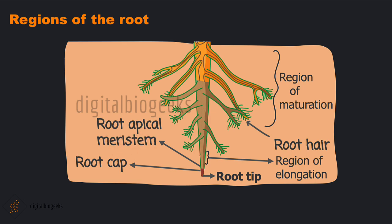Meristematic cells are responsible for the growth of the roots. The cells here are small, thin-walled, and with dense cytoplasm. These characteristics help those cells to divide rapidly, and hence the root grows faster.